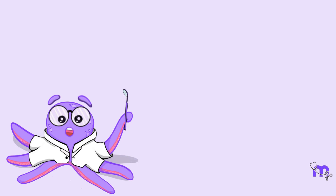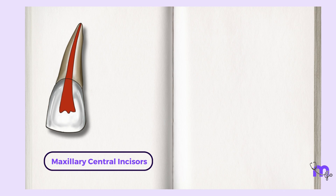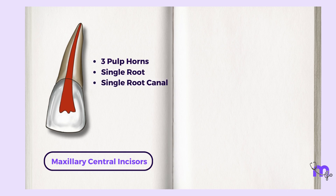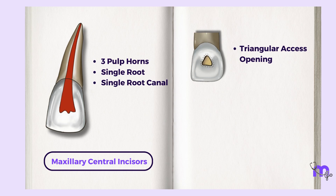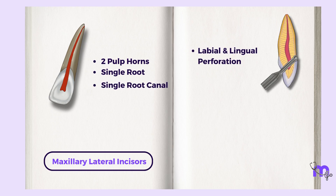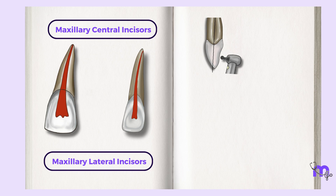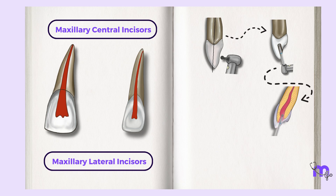Let's go through the essential points in relation to axis cavity preparations of maxillary incisors. Maxillary central incisors have 3 pulp horns, a single root, and in most cases a single root canal. Axis opening is triangular, and the most commonly seen error is labial perforation. Maxillary lateral incisors are smaller in dimension, have 2 pulp horns, a single conical root, and 1 root canal. Labial and lingual perforation can occur due to root curvature. The mode of access opening is the same for all incisors: the burr is initially placed perpendicular to the long axis of the tooth, then parallel to the long axis until the drop is felt, accessing the pulp chamber which is de-roofed for straight-line access.